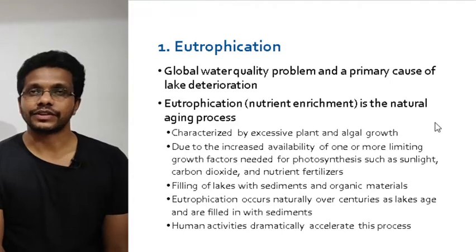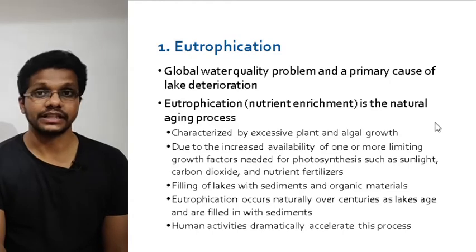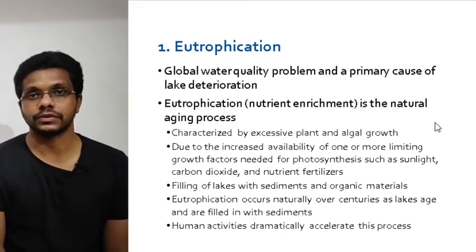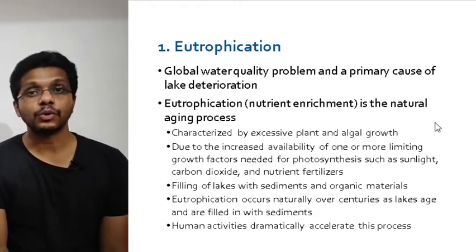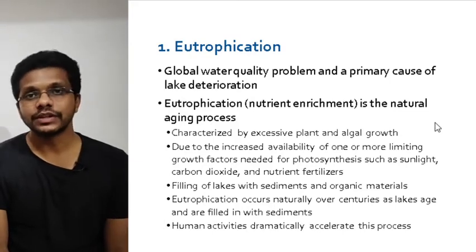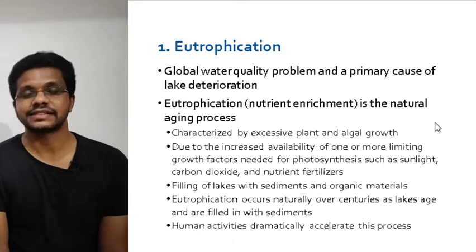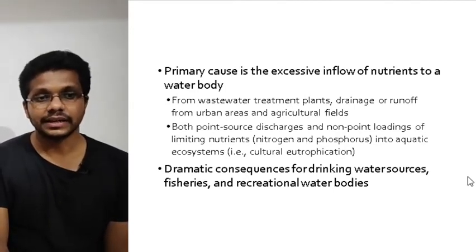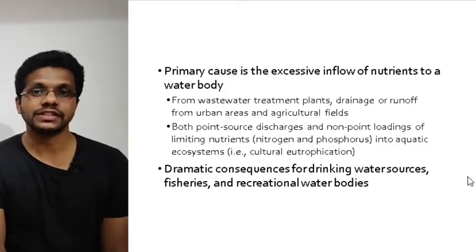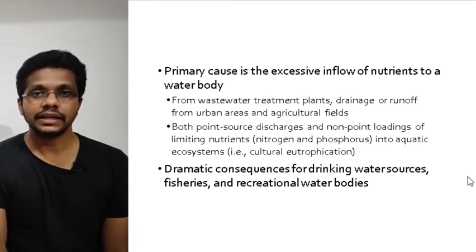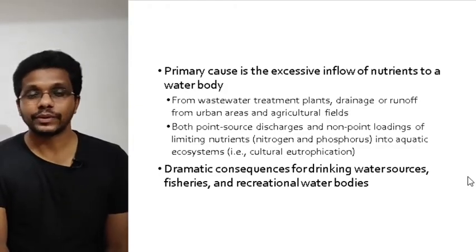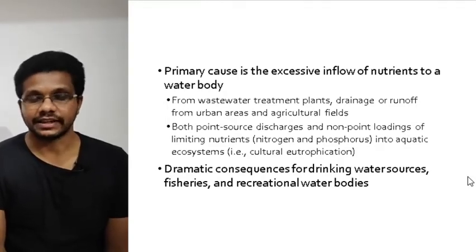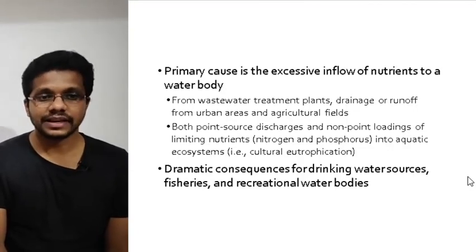In human-induced eutrophication, nutrients accumulate in lakes in huge quantities. Ordinary lakes have limited amounts of nitrogen and phosphorus, but when we apply fertilizers to agricultural land or dump waste into the lake, the nitrogen and phosphorus levels increase, leading to increased algae reproduction and ecosystem changes. The primary cause is excessive nutrients from non-point sources such as agricultural runoff, or point sources such as industrial discharges or effluent from wastewater treatment plants.